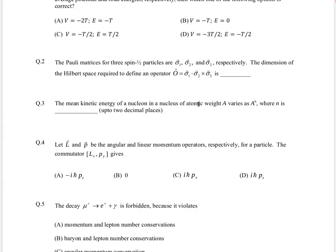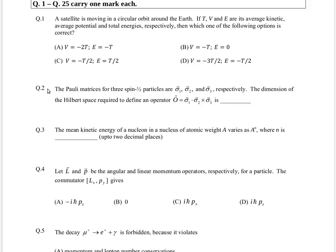Looking at the GATE 2015 physics paper, let's go to question number two. The Pauli matrices for three spin-1/2 particles are sigma one, sigma two, and sigma three respectively. The dimension of the Hilbert space required to define an operator O-cap equal to sigma one dot (sigma two cross sigma three) is what we need to find.